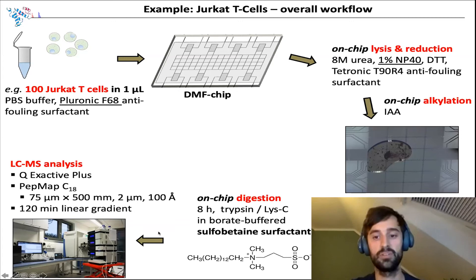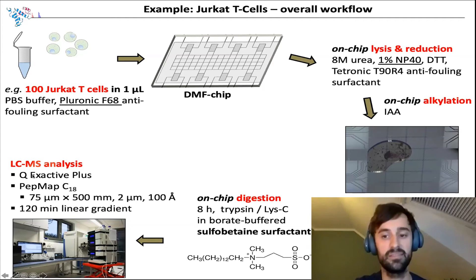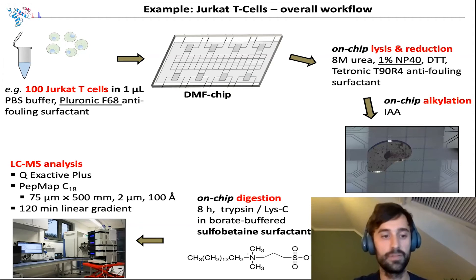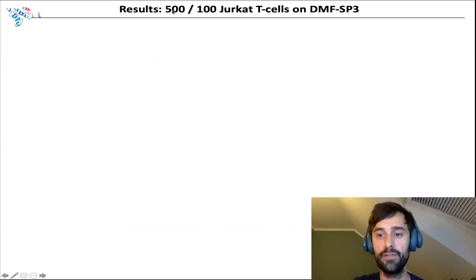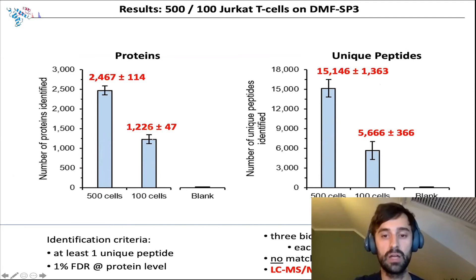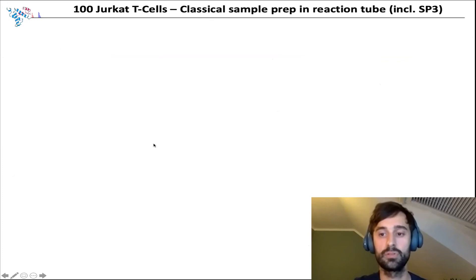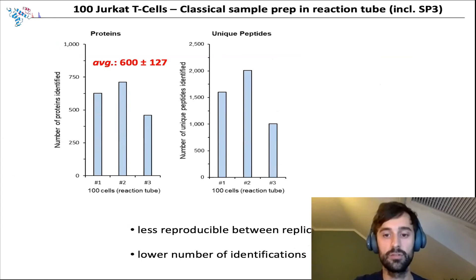The analysis was carried out on our Q Exactive class instrument. This work was mostly focused on sample prep, so back then we didn't optimize much for the LC-MS analysis. The setup contains a 50 centimeter PepMap column, which we usually use for full proteome analysis in our lab. Despite this simple setup, when we analyzed 500 or 100 Jurkat cells prepared on chip, we could identify almost 2,500 proteins on average from 500 cells and up to 1,200 from only 100 cells. Comparing this to a tube protocol using low volumes and pipetting from Eppendorf low-bind tubes, we only got around 600 protein IDs from 100 cells with much higher deviations — so on-chip we got twice as many IDs.